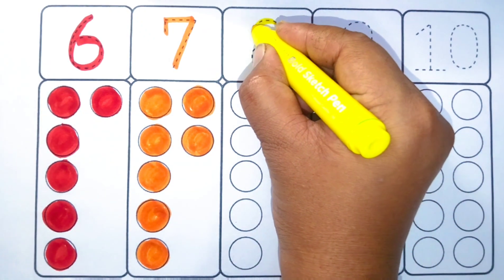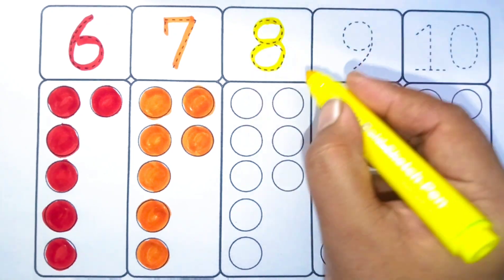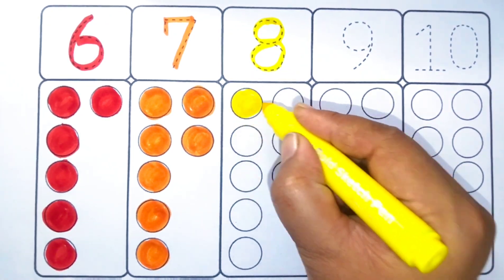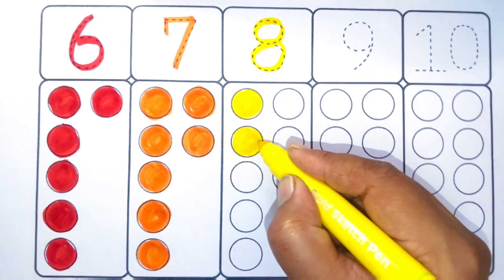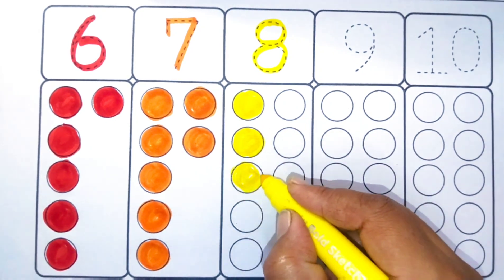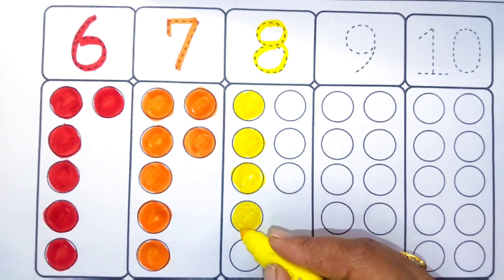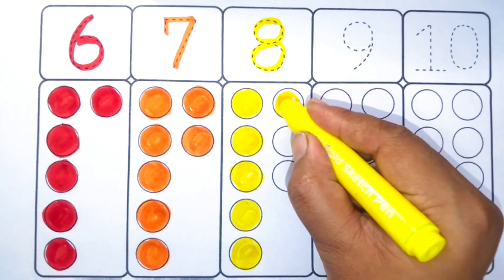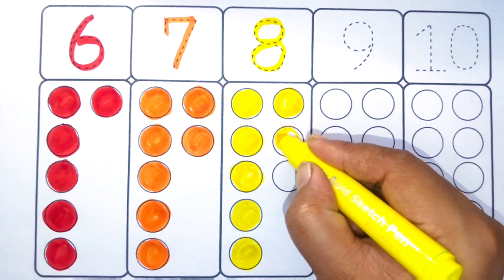Yellow color. Eight. One, two, three, four, five, six, seven.